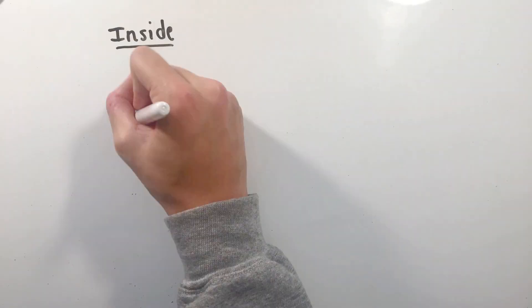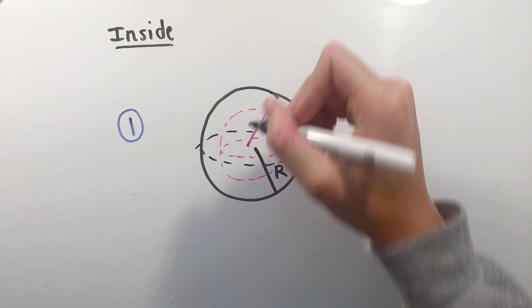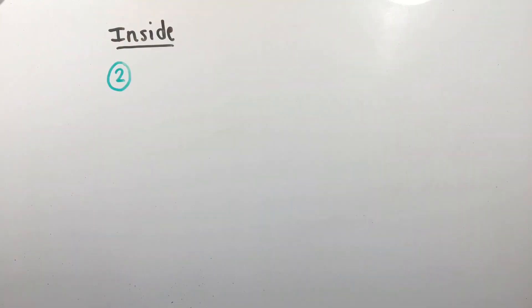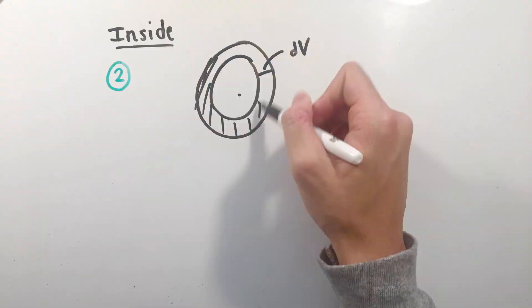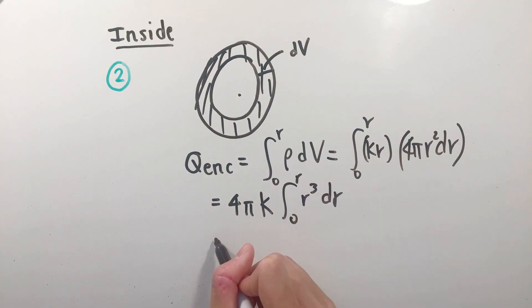For the inside of the sphere, the symmetry is quite logically spherical, so let's make our Gaussian surface a sphere of radius small r. However, calculating the enclosed charge requires a bit more work this time, as the charge is not uniformly distributed over a surface or line. Instead, at any given radius lowercase r, we can find the enclosed charge by integrating the density function as a function of r over our total volume.